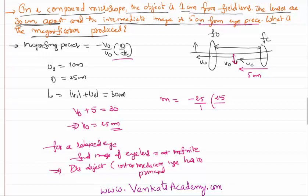The intermediate image has to be at the principal focus of the eyepiece lens. That means the value of ue that is given as 5 centimeters is nothing but equal to fe itself, 5 centimeters. So I can substitute that here.